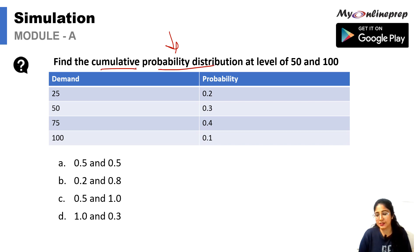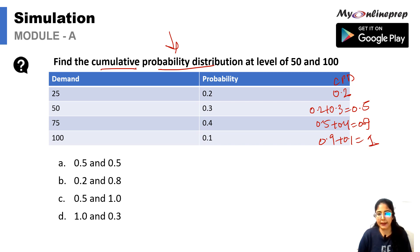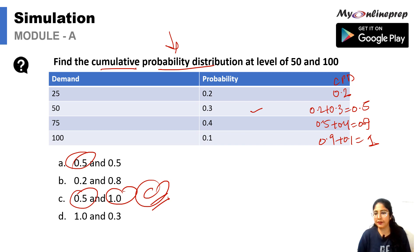Here we have a question where we need to find the cumulative probability distribution, which is very important when applying the Monte Carlo simulation model. Just as we calculate cumulative frequency, we calculate cumulative probability: 0.2, then 0.2 + 0.3 = 0.5, then 0.5 + 0.4 = 0.9, then 0.9 + 0.1 = 1. At the 50 level cumulative probability is 0.5, and at the 100 level it is 1. Option C is correct.